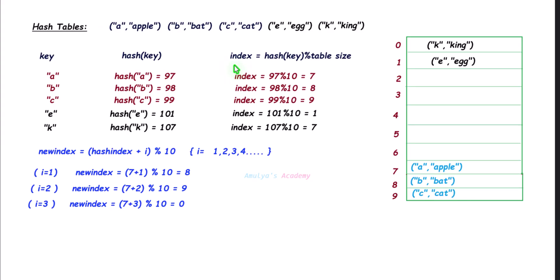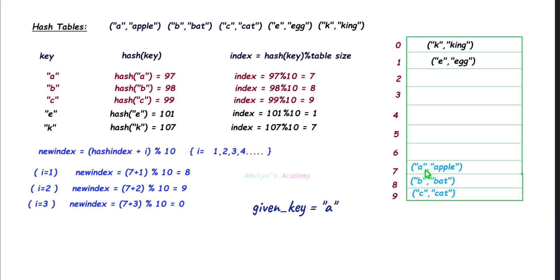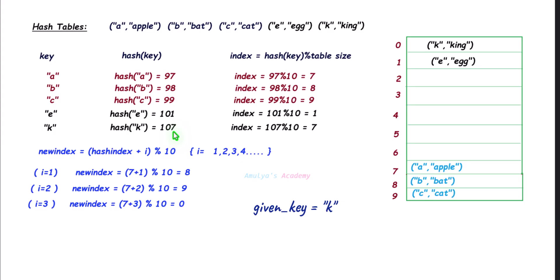Here we have 5 key-value pairs using open addressing. To delete key 'a' (apple): find the hash value and index — index 7. Check that slot — it's not empty. Check whether the key matches the given key — yes, it matches. So mark this slot as deleted. Now for another example, key 'k' (king): find its hash code and index, go to that index and check whether the slot is empty. It's not empty, so match the key — the key at that slot is 'a', not matching.